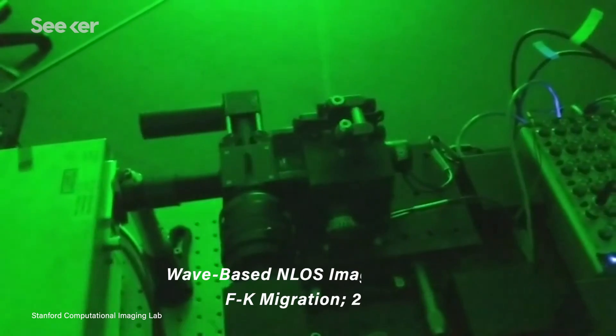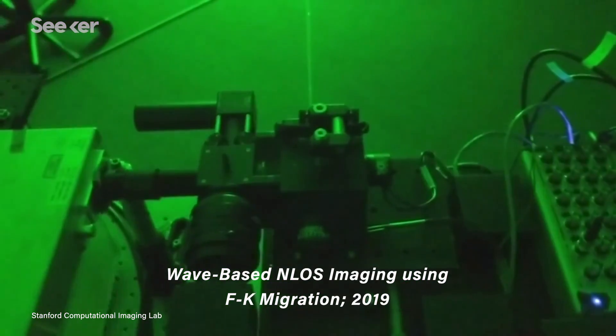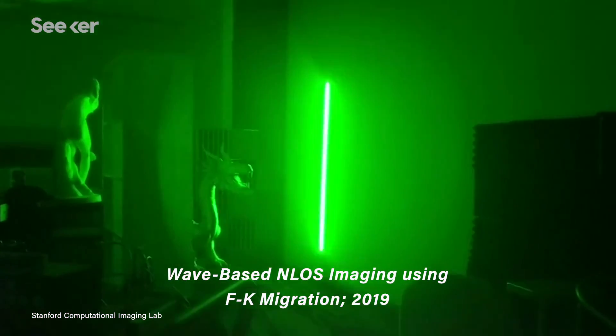This latest work comes from the same team at Stanford that developed a wave-based non-line-of-sight imaging system back in 2019. This camera is capable of seeing around corners by bouncing a laser off the wall and analyzing the reflected light that returns to the sensor.